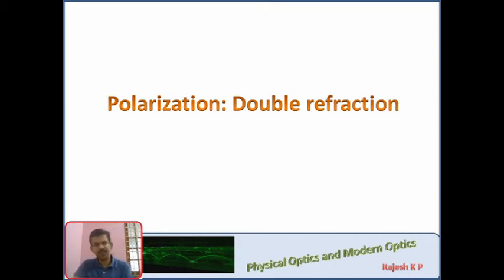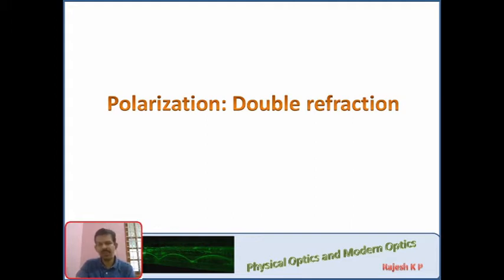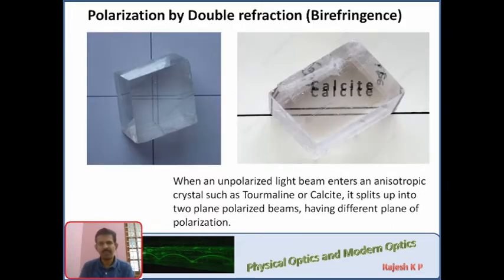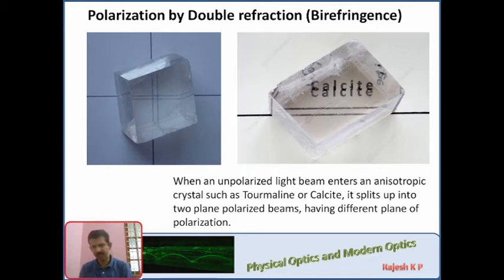Today we will continue our discussion on polarization — plane polarized light and the methods to produce it. First, double refraction — birefringence. We will discuss crystals like tourmaline and calcite. These are anisotropic crystals.